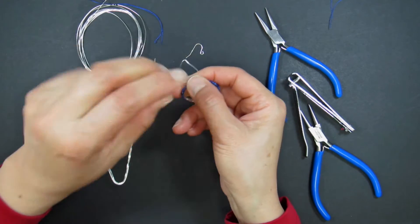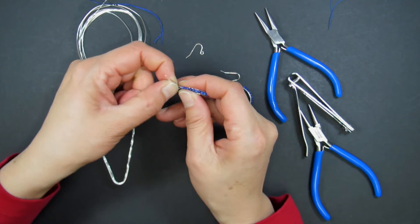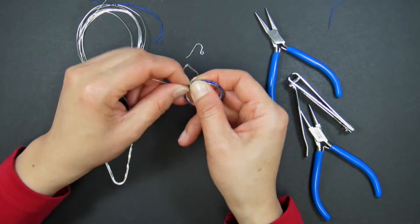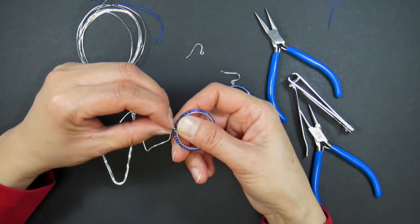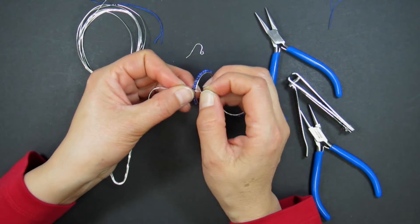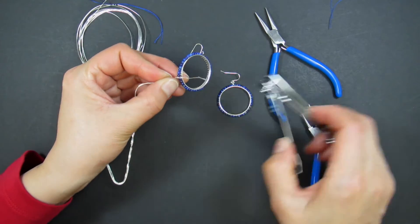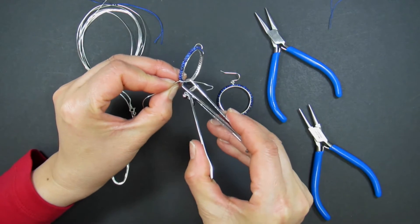Form an X with your wire and twist the two ends together twice. Trim the shorter end of the wire with your nail clippers.